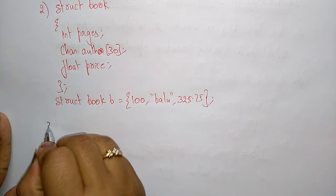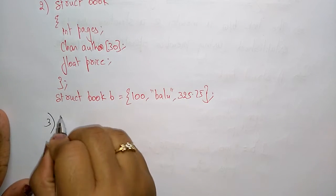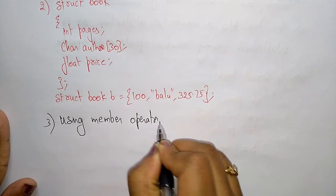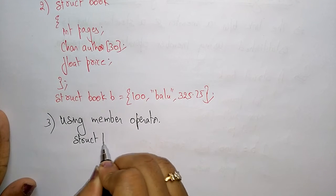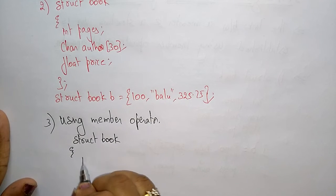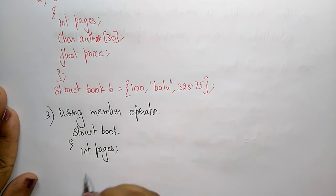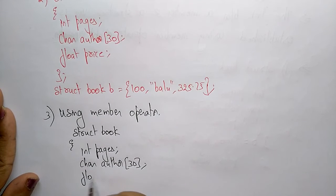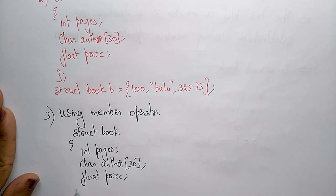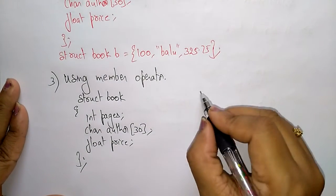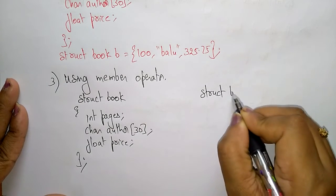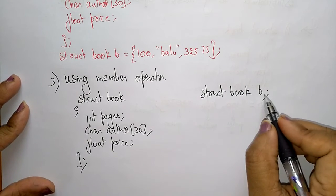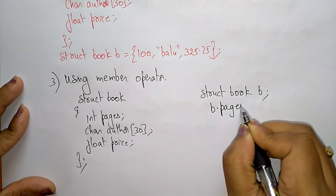Let us see the third way of initializing using member operator. struct book { int pages; char author[30]; float price; }. So here I'm writing struct book B - I'm declaring this book with the variable B.